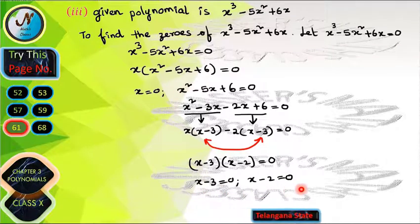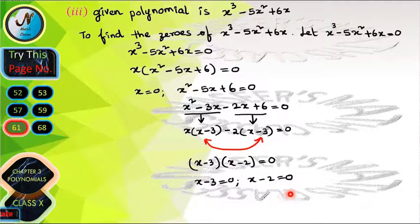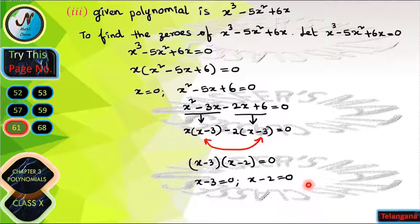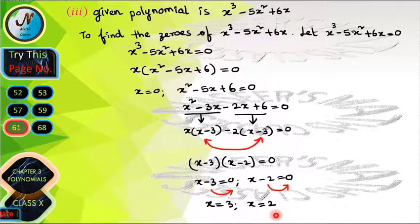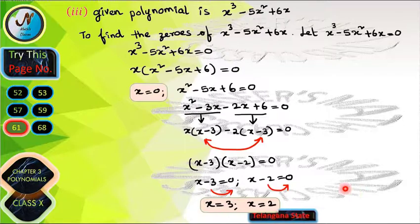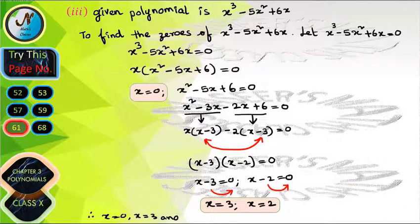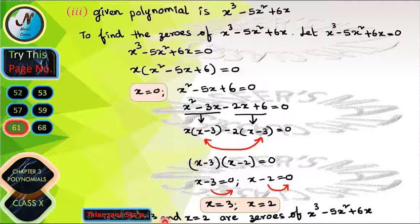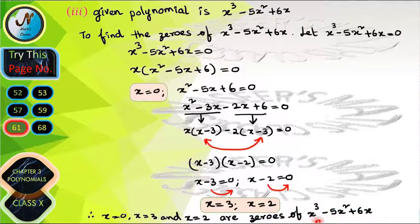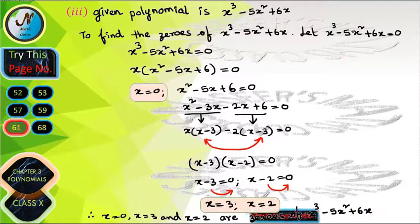Setting each factor to zero: x − 3 = 0 gives x = 3, and x − 2 = 0 gives x = 2. Therefore, x = 0, x = 2, and x = 3 are the three zeros of the cubic polynomial x³ − 5x² + 6x.